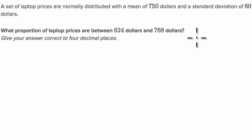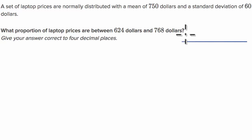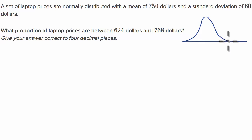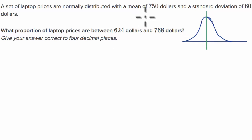So let's think about what they are asking. We have a normal distribution for the prices — it should be symmetric, so it would look something like this. And we have the mean right in the center, which is $750.